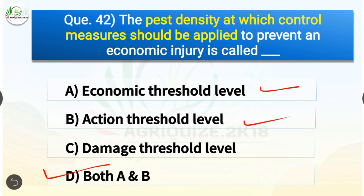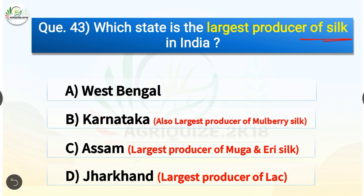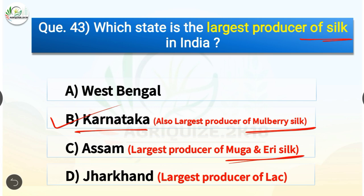Question number forty-three: which state is the largest producer of silk in India? Options are West Bengal, Karnataka, Assam, or Jharkhand. The correct answer is option B, Karnataka. Karnataka is the largest producer of silk in India and also the largest producer of mulberry silk, whereas Assam is the largest producer of muga and eri silk, and Jharkhand is the largest producer of lac.